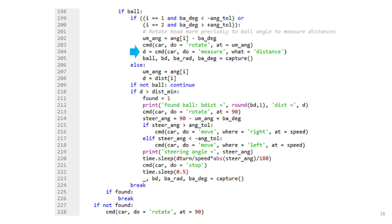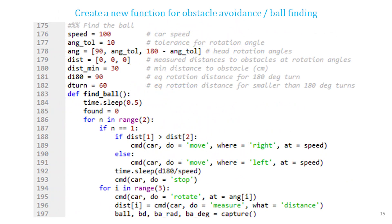If the ball is found the car would rotate its head in the direction of the ball to measure the distance to an obstacle in that direction. If this distance is larger than dist_min then the car would rotate its whole body in the direction of the ball and move in that direction. If no ball is found the car would rotate its body 180 degrees to face away from the obstacle and rotate its head again to look for a ball.